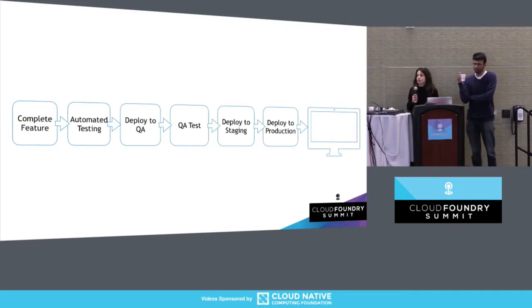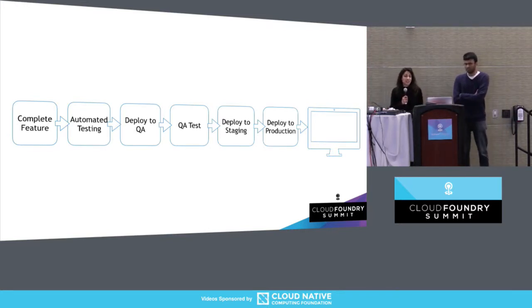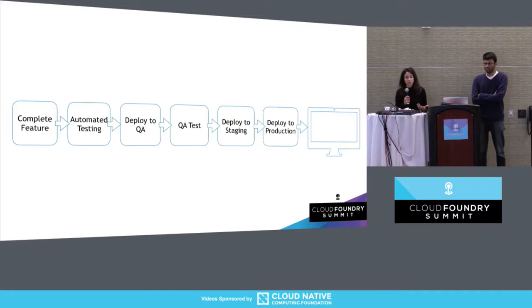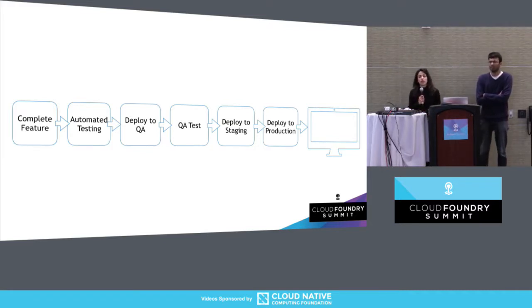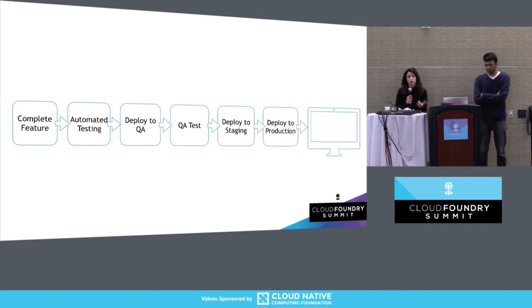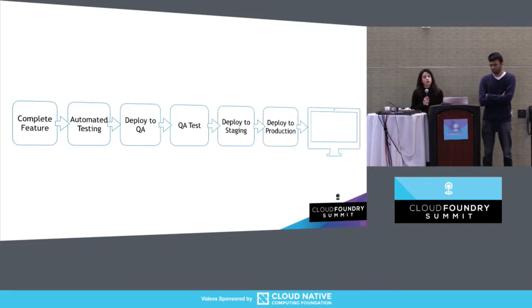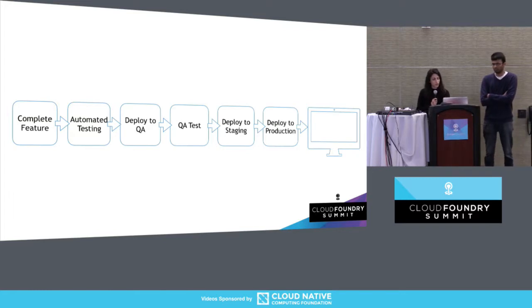Once a developer finishes their feature work, they would typically push their code through an automated testing system and be deployed on a QA system so that acceptance teams can do acceptance testing on it. Once clear, it would be deployed on a staging system almost exactly the same as production, to polish off any last bugs not caught in smaller scale testing. After clearing that, it would be deployed onto production, and the release process also includes support — feeding bugs back to developers.